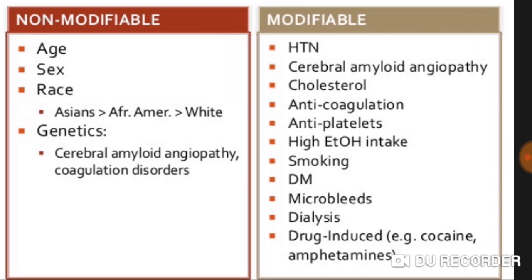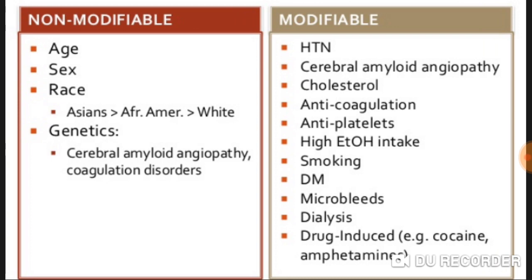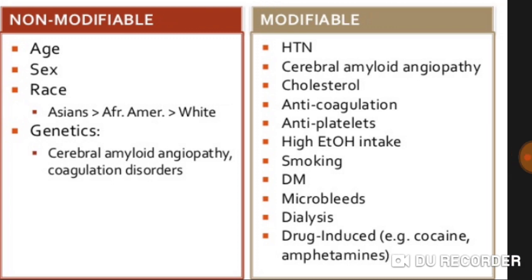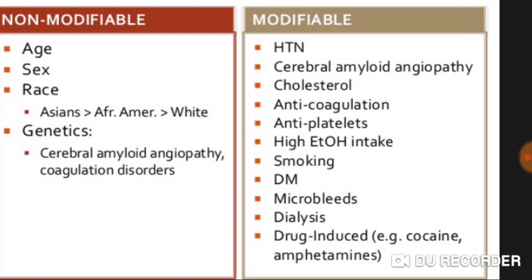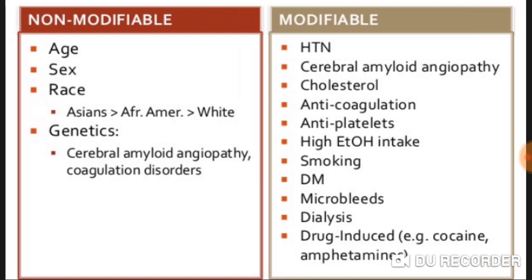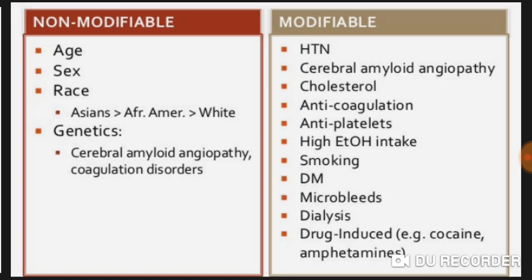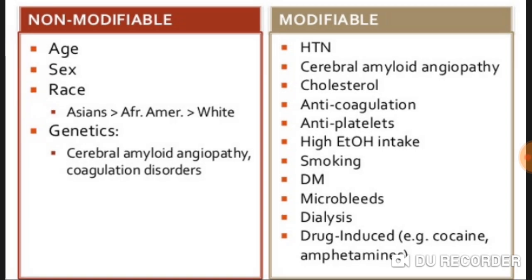Other complications include cholesterol issues and anticoagulation — when someone is on anticoagulant therapy with very high doses, it can cause bleeding. High alcohol intake is a risk factor, but she is not alcoholic. She is not a smoker, though smoking is a modifiable risk factor. She is diabetic. She is not on dialysis. Drug-induced causes like cocaine and amphetamines are also noted.